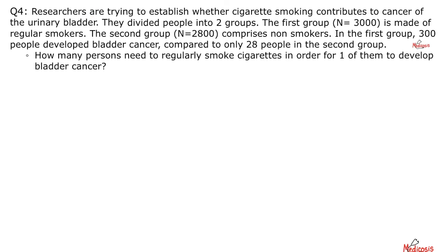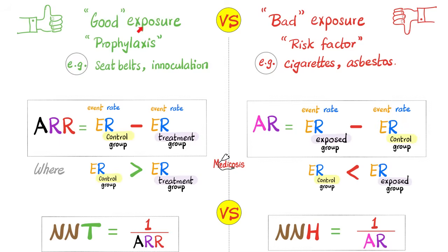Question number four is your homework — let me know your answer in the comments. To find the answer key, watch my video titled 'Number Needed to Harm.' In a nutshell: when it's a good exposure, calculate the absolute risk reduction, and flipping it gives the number needed to treat. When it's a bad exposure, calculate the attributable risk, and the reciprocal is the number needed to harm. Definition: number needed to treat is the number of people that need to be treated for one of them to benefit. Number needed to harm is the number of people that need to be exposed to a bad thing for one of them to suffer.